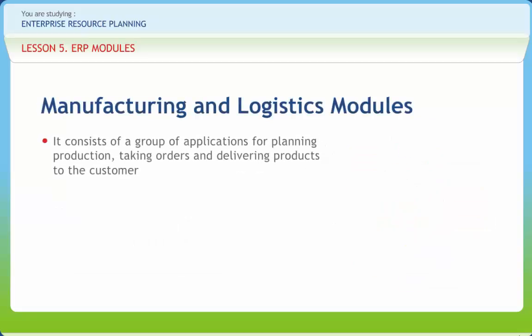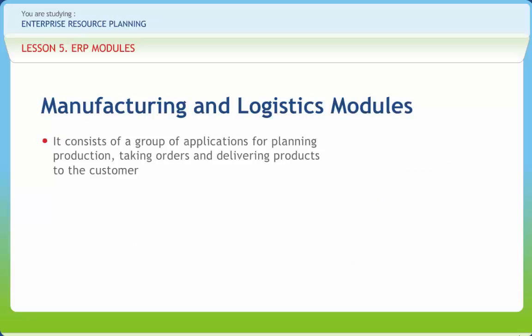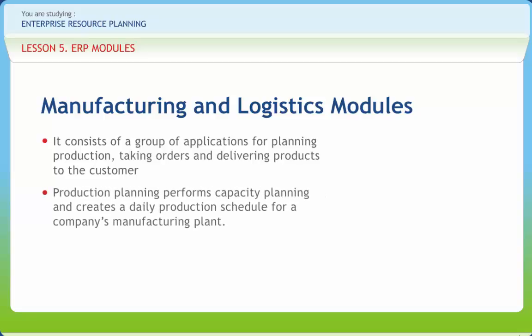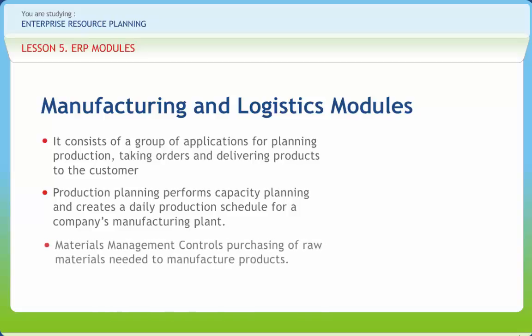It consists of a group of applications for planning production, taking orders, and delivering products to the customer. Production Planning performs capacity planning and creates a daily production schedule for a company's manufacturing plant. Materials Management controls purchasing of raw materials needed to manufacture products. The main subsystem of material management modules includes pre-purchasing activities — items with services and items with materials. Planned service specification means services whose precise nature and intended scope are already known at the beginning of the procurement project. Unplanned service specifications are services which are not defined initially.